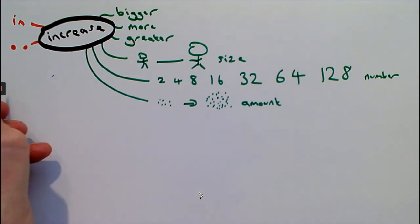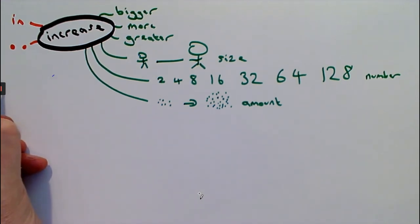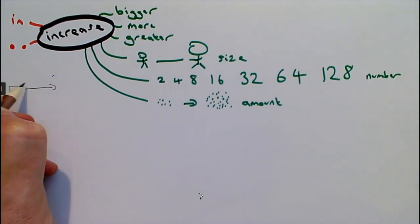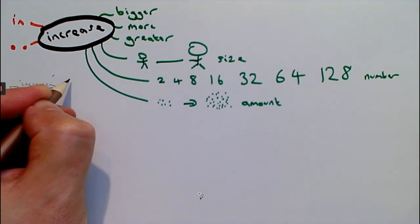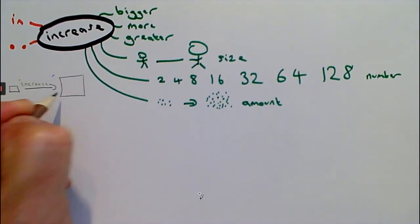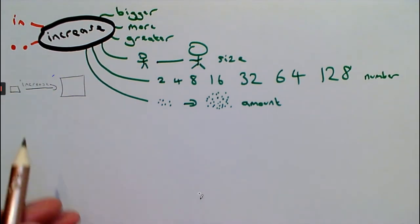And our picture for increase will show that. We'll start with perhaps just a little square here, and then it will increase. I'll write that word here, to become a big square. It increases to become a big square.